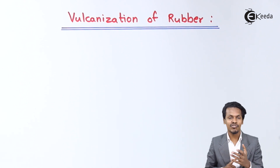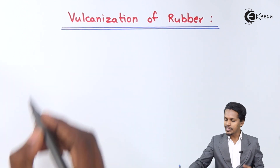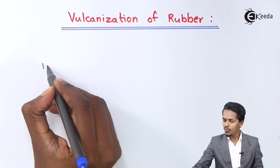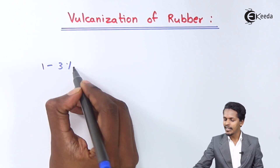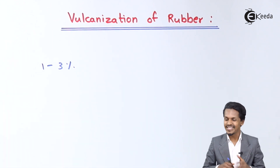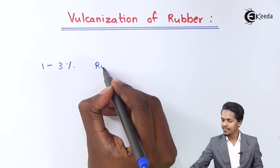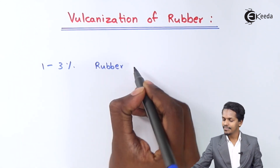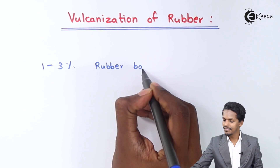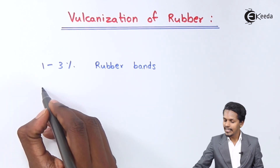This vulcanization process was discovered by Charles Goodyear. Now let me talk about the advantages of adding sulfur in natural rubber. It has been found that if 1 to 3 percent of sulfur is added in a rubber during the vulcanization process, that rubber can be used in rubber bands.